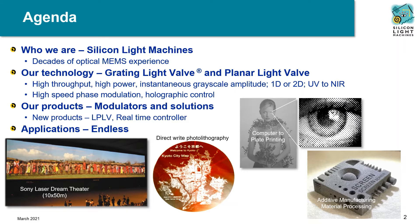Our products include 1D and 2D true grayscale amplitude modulators as well as full phase modulators, all with high speed and high power handling for UV to NIR wavelengths. We are excited to introduce new products including a large aperture linear planar light valve amplitude modulator for material processing, as well as a new real-time controller for direct communication between the module and the computer.